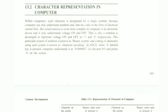The characteristic representation within a computer — each character is assigned a single number, because the computer can only understand numbers. It can only understand binary numbers — ones and zeros. The language it can understand is only in the form of electronic current flow, but the actual process is even more complex.